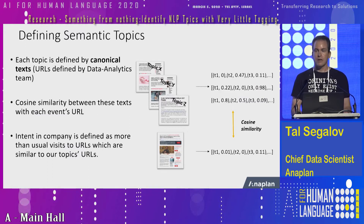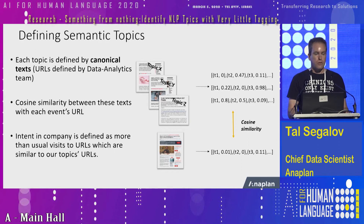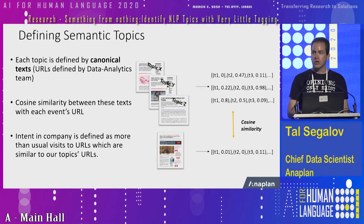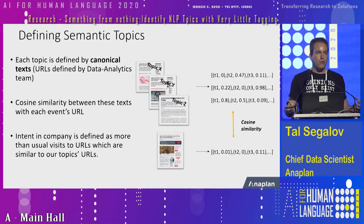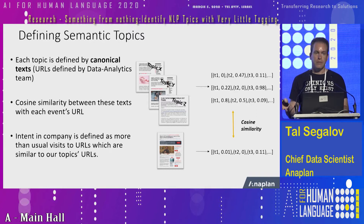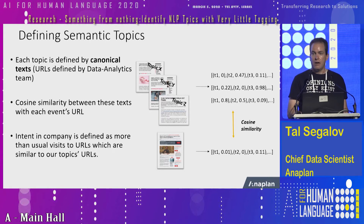Those topics are basically defined by looking at examples of text on the web that talks about each one of those topics. What we need to do is see different pages that define and talk about that topic, and extract meaningful semantic topics from that. Once we have those semantic topics, we can take any unknown page, use some distance metric — for example a cosine distance — and see how similar that page is to the pages that we trained on. We can then use that information to track things like intent and company, and create other insights that we use in our machine learning.